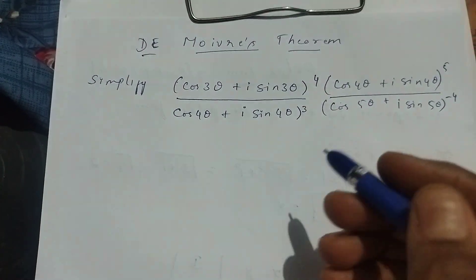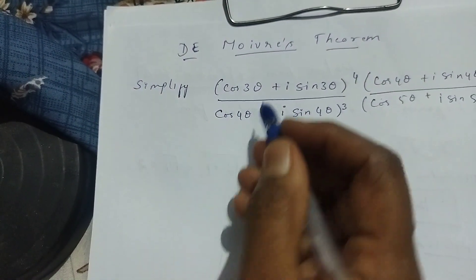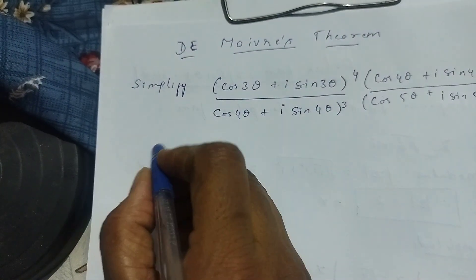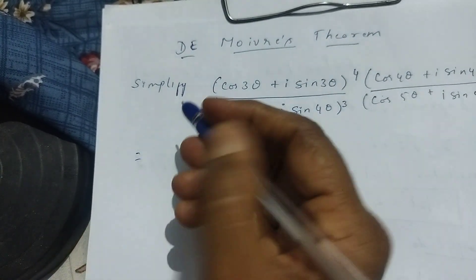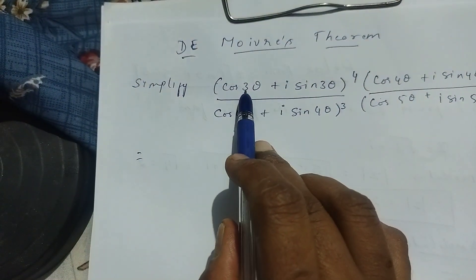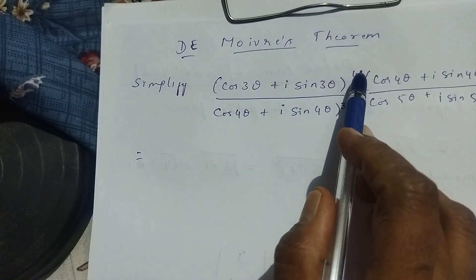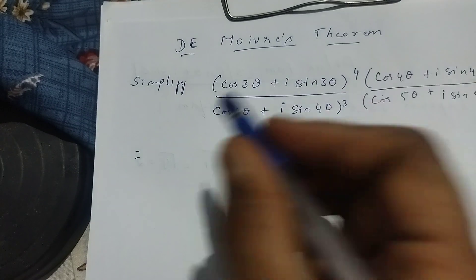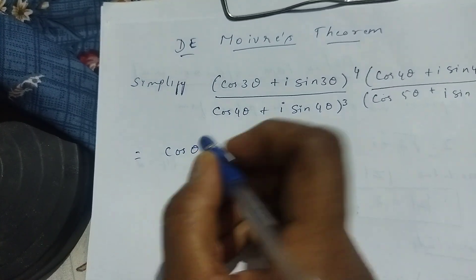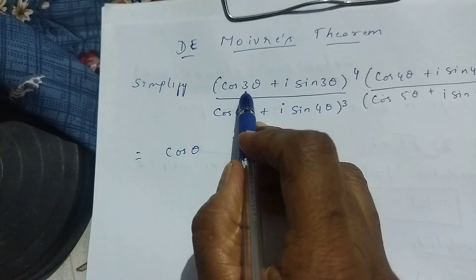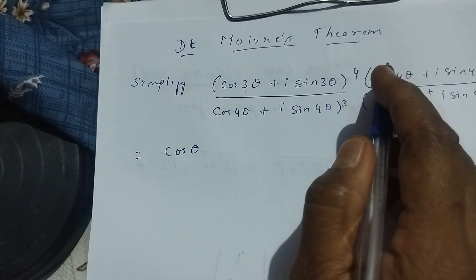How to solve this? How to apply De Moivre's theorem? What we have to do first is just multiply the angle and the power and write it. I will show you how. You just write cos θ, then take this 3 and multiply with 4 — 3 fours are 12.